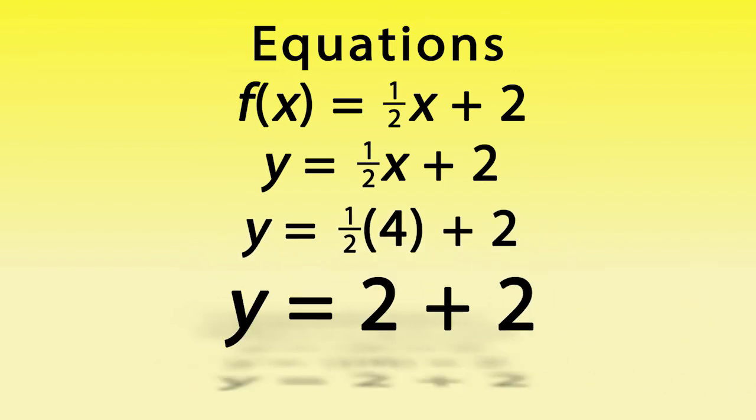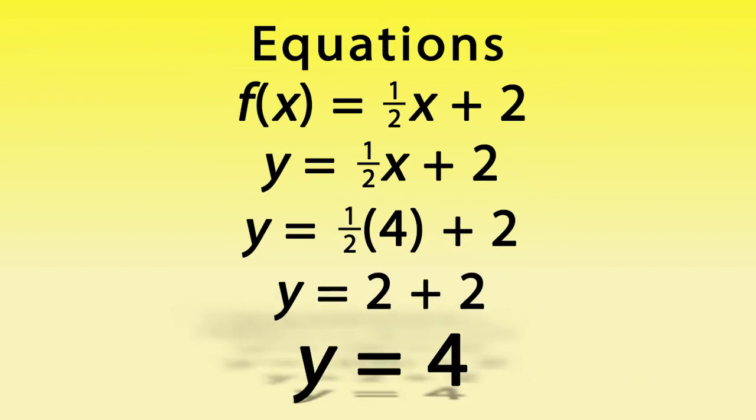In this case, the range would be 4 when X is 4, and this could be graphed as ordered pair (4, 4).